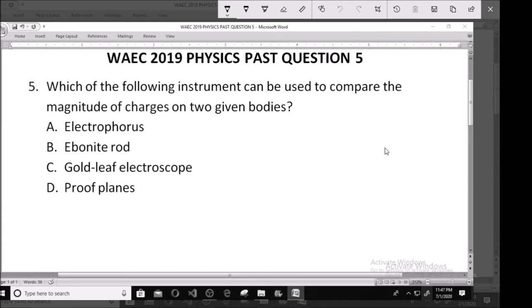Hello and welcome. Let's look at WAEC 2019 physics past question number 5. Which of the following instruments can be used to compare the magnitude of charges on two given bodies?